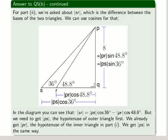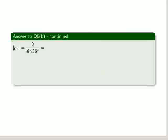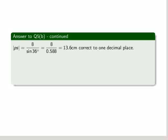We get PS in the same way. So PS is 8 over the sine of 36, which is 8 over 0.588, and that's 13.6 correct to one decimal place.